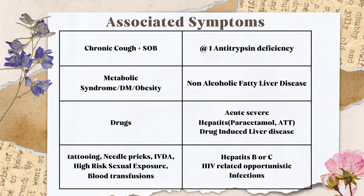Chronic cough and shortness of breath — if a patient has chronic cough and shortness of breath, and on examination you find wheezes and ronchi, that might be a case of alpha-1 antitrypsin deficiency. If the patient has metabolic syndrome — diabetes and morbid obesity — that might be a case of non-alcoholic fatty liver disease, though these patients usually present with elevation of liver enzymes (ALT, AST) and fatty changes on ultrasound rather than overt jaundice.